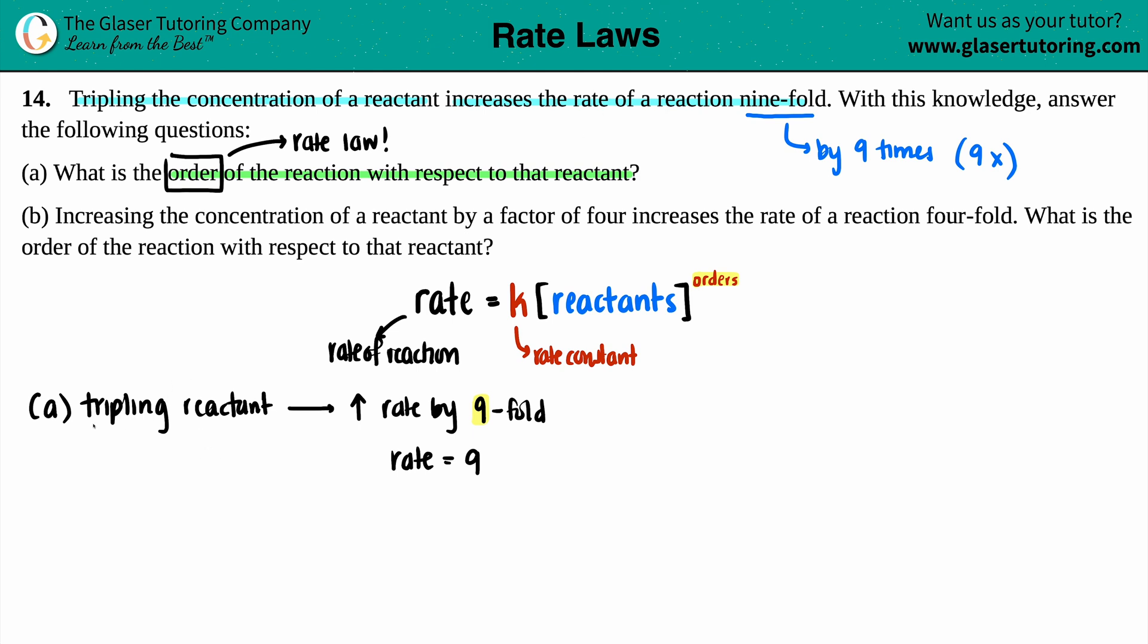Now tripling the reactant - they didn't really give me a number here, but maybe there's a number that goes with the word tripling. If you triple something, that means you're going up by three times. So anytime you think about tripling, you always think of three times. We know that for our reactant, we're going to plug in a 3. So we got a reactant number and a rate number. We're searching for the order.